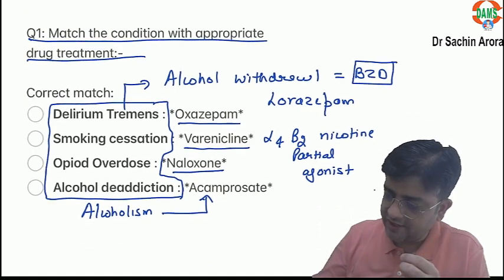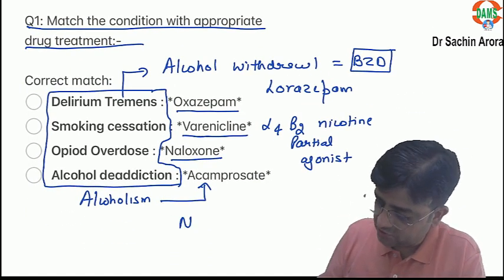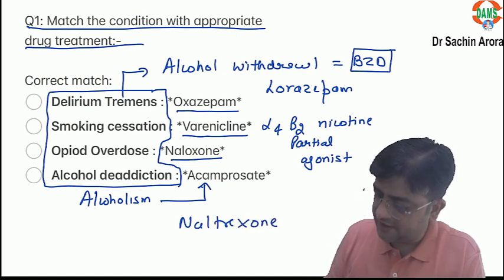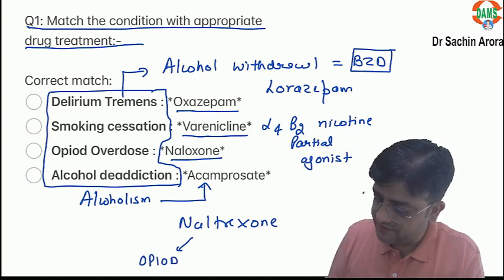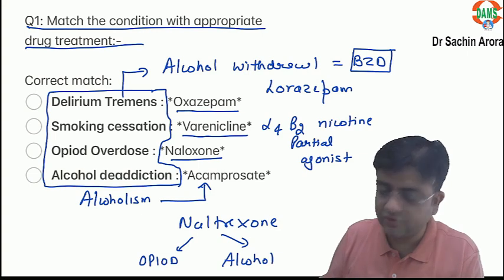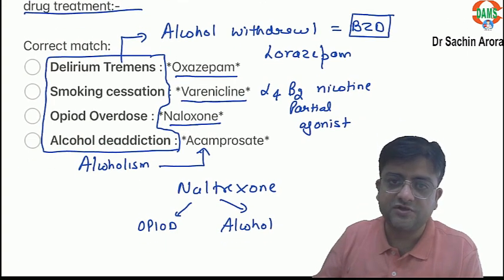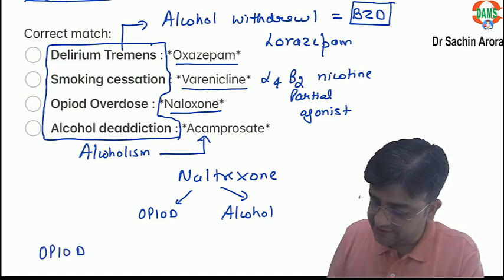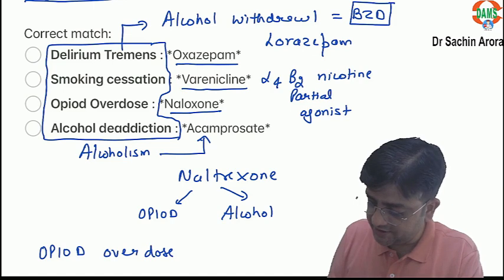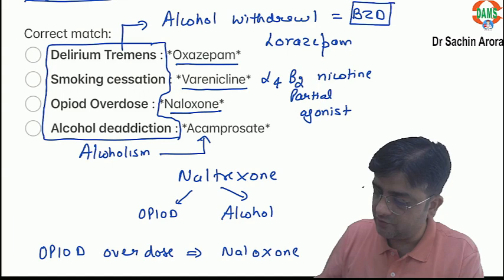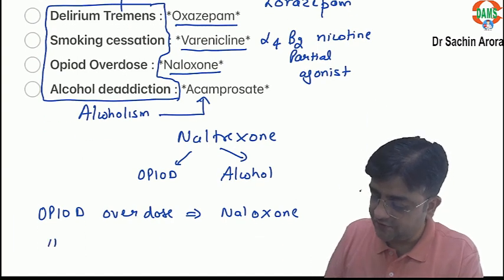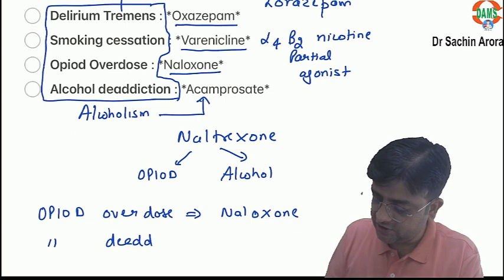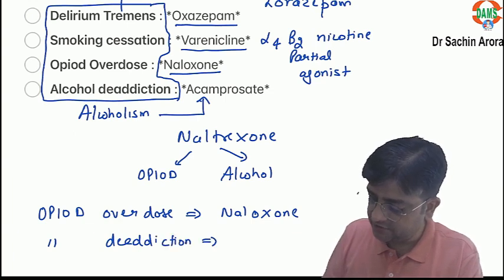There are two drugs that are approved and used: naltrexone and acamprosate. Please remember, naltrexone is used for opioids as well as for alcohol — both. So there is no confusion, because the other option was naloxone. Remember: opioid overdose is naloxone, and opioid deaddiction is naltrexone. Students were very clear that overdose was mentioned; if it had been addiction, the answer becomes naltrexone.